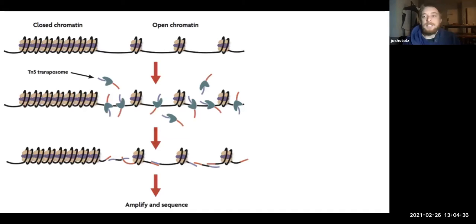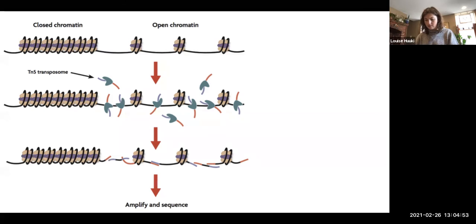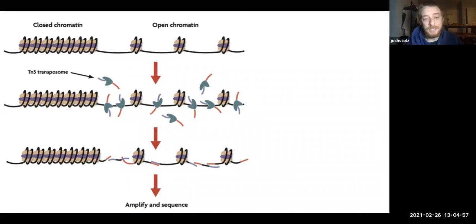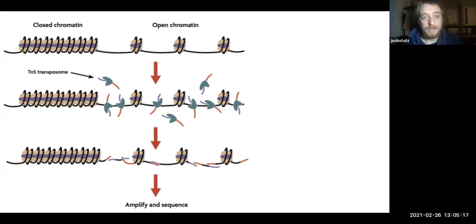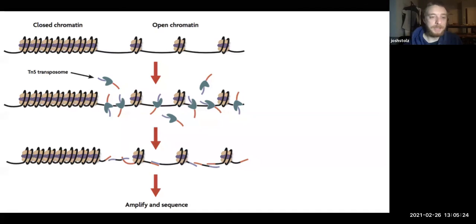We're looking at ATAC-seq data, but it's a very similar process for all chromatin digestion data. For those who don't know, ATAC-seq stands for Assay for Transposase-Accessible Chromatin, and it gives us an idea of the accessibility of DNA in chromatin. It does this by digesting what's called linker DNA in between nucleosomes. DNA on the nucleosome itself is considered protected and will be less digested.